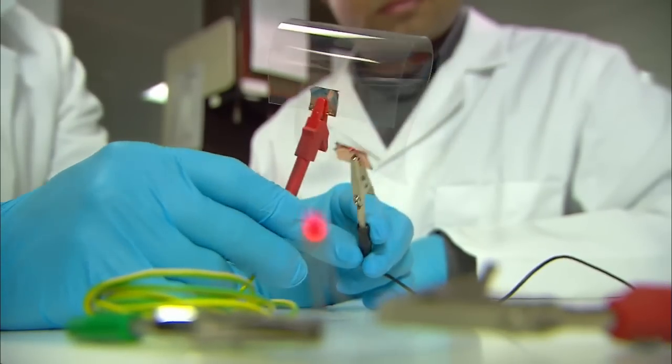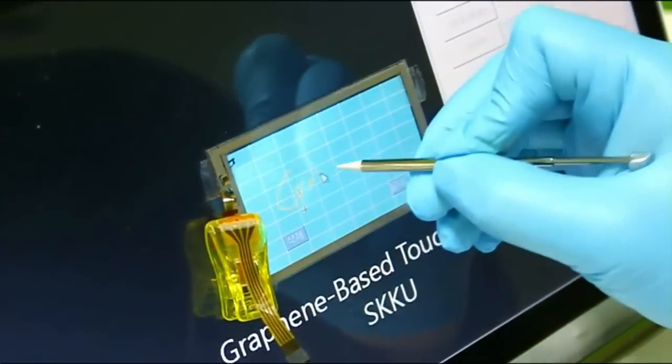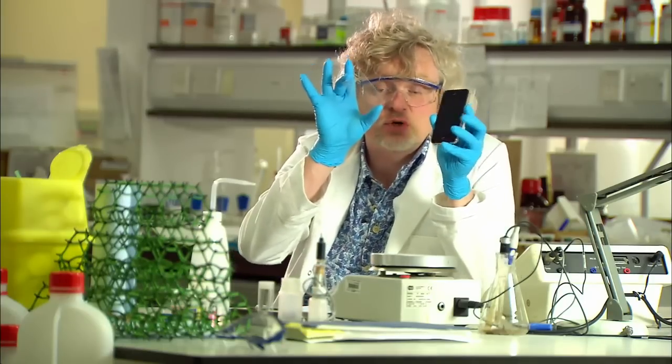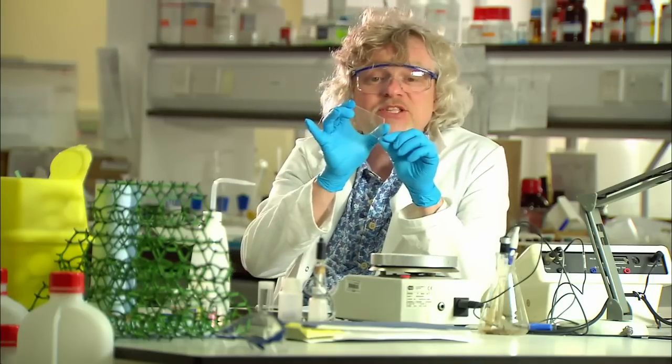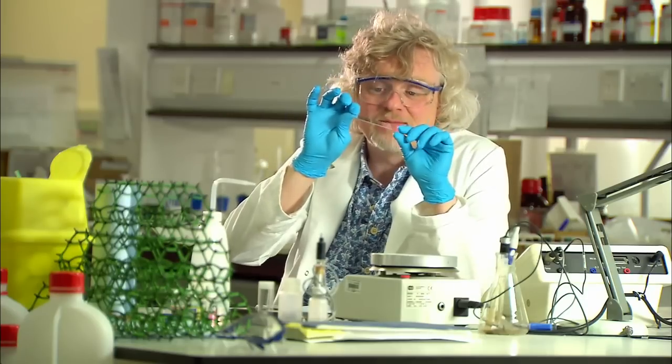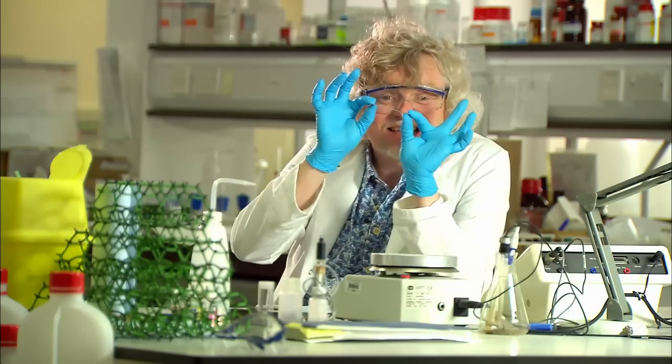Graphene's thinness also means it's 97% transparent, tackling a problem we face with touchscreen technology. Today's mobile phones contain an element called indium in the touchscreens to make them work. It's rare and becoming more expensive, and the coating that it makes is brittle and inflexible.